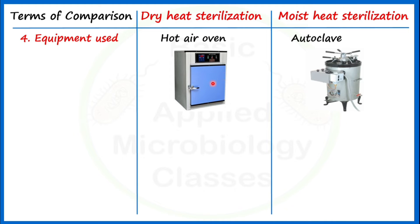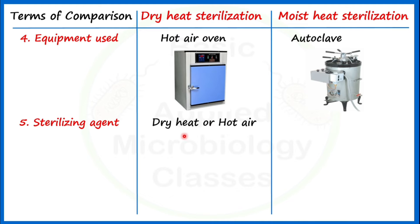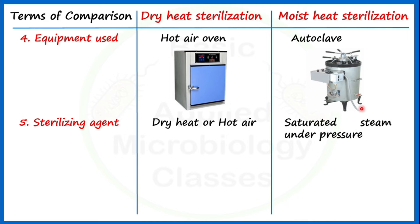The fifth point of difference is the sterilizing agent. In case of dry heat sterilization, or the hot air oven, the key sterilizing agent is dry heat or hot air. And in the case of the autoclave, the sterilizing agent is saturated steam under pressure, which increases the temperature of the vessel and leads to sterilization of different types of materials.